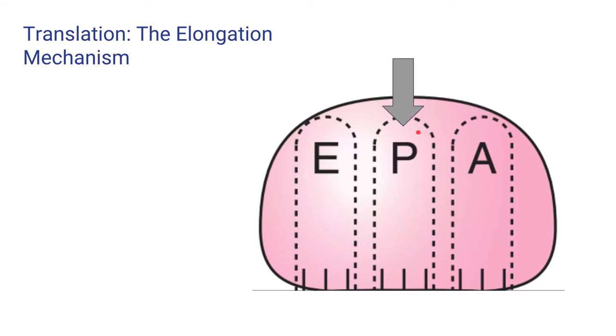The P site is where a peptidyl-tRNA is bound at the time a new aminoacyl-tRNA enters the ribosome. And finally, the E site is the exit site to which deacylated tRNAs bind on the way out.